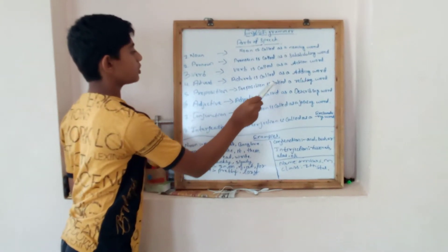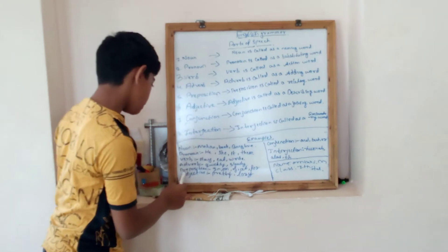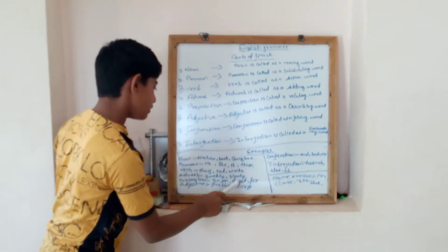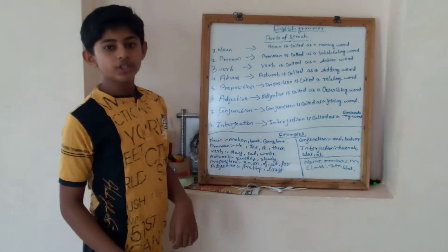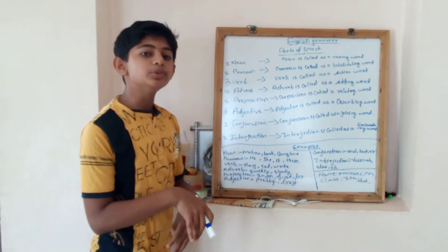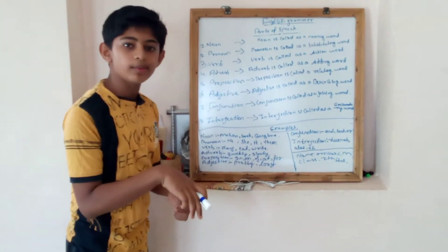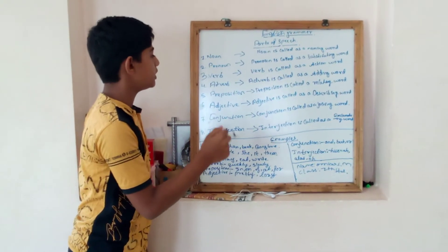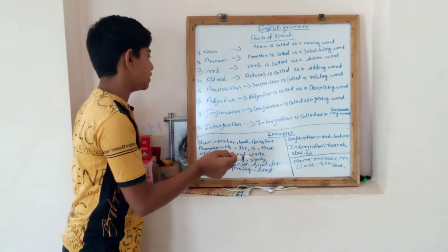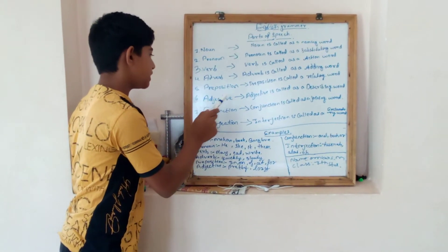And preposition. Preposition is called as a relating word - in, on, of, at, for. The book is on the table. Where is the book? The book is on the table. So it relates that, it tells us where the book is. So it is called as the relating word.